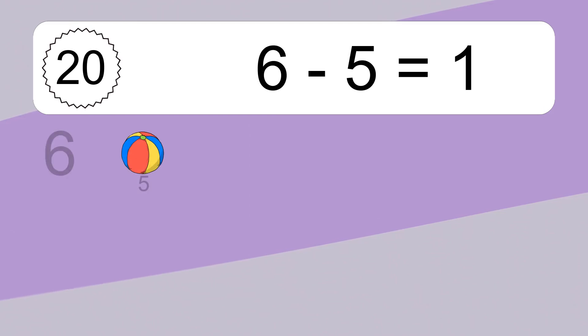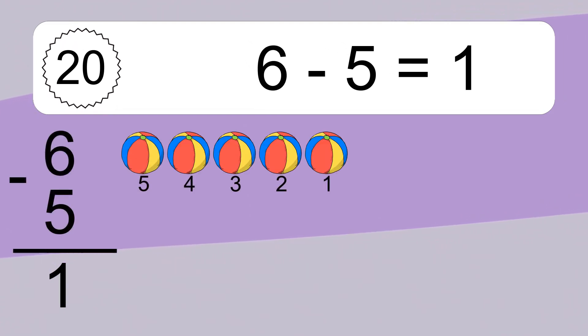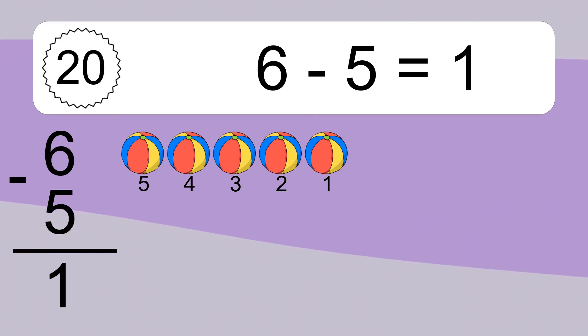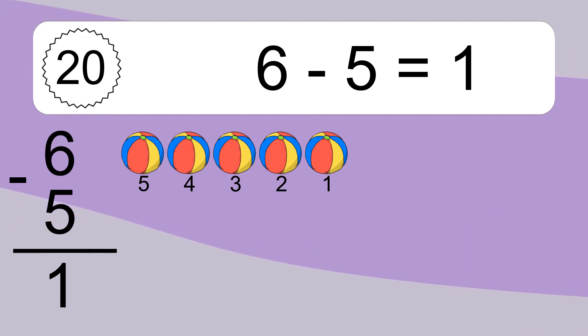6 minus 5 equals what? 6 minus 5 equals 1. Let's count it: 5, 4, 3, 2, 1.